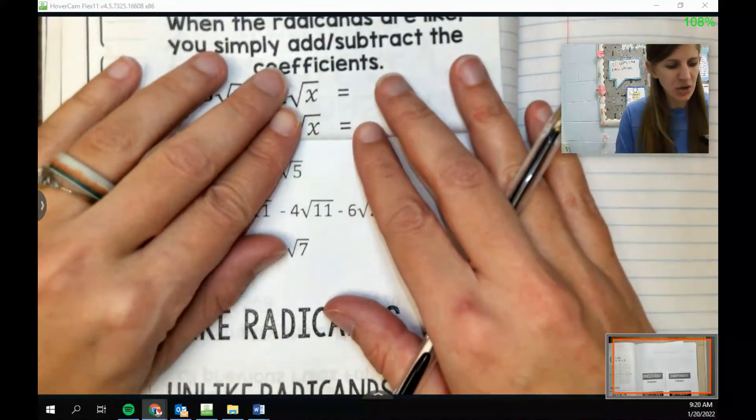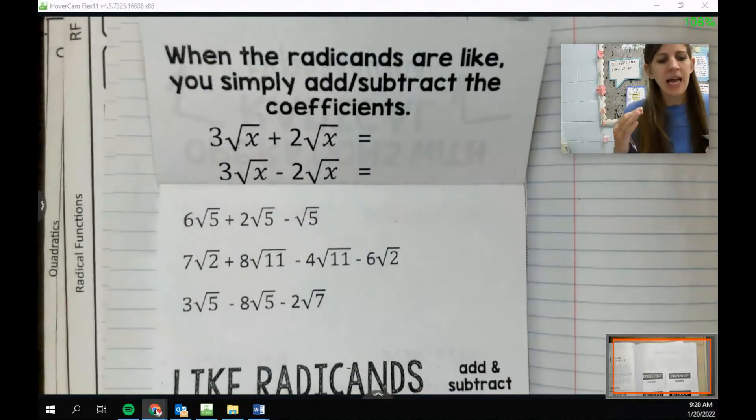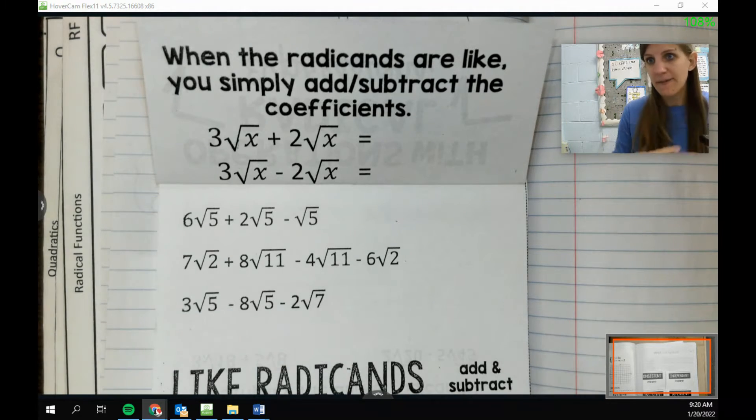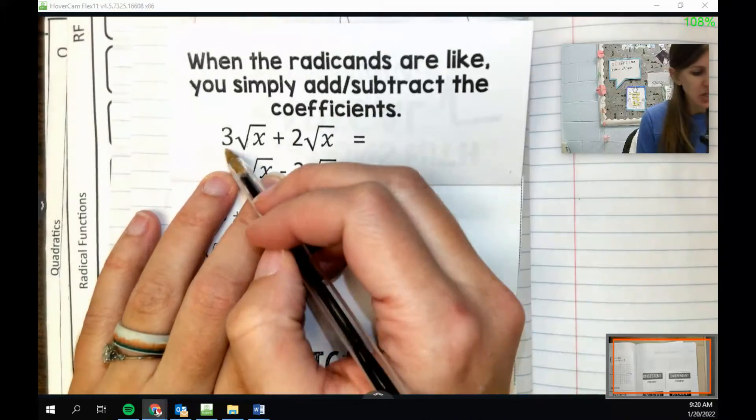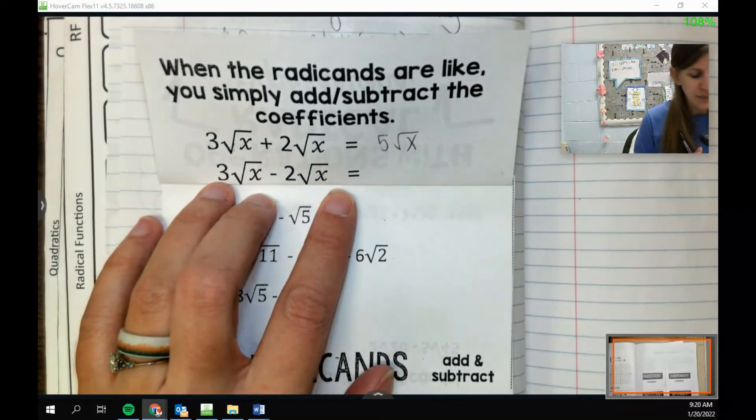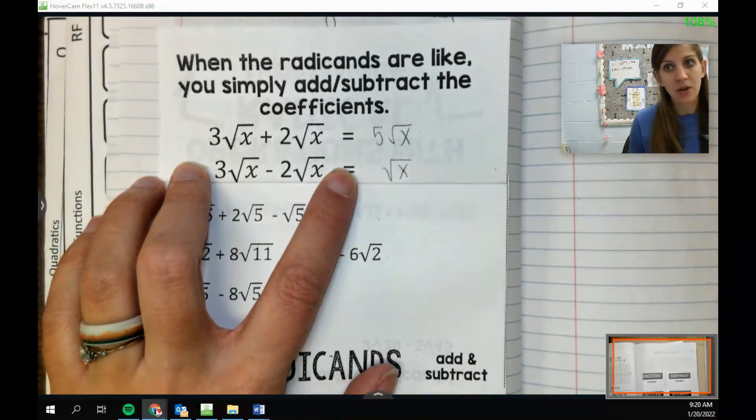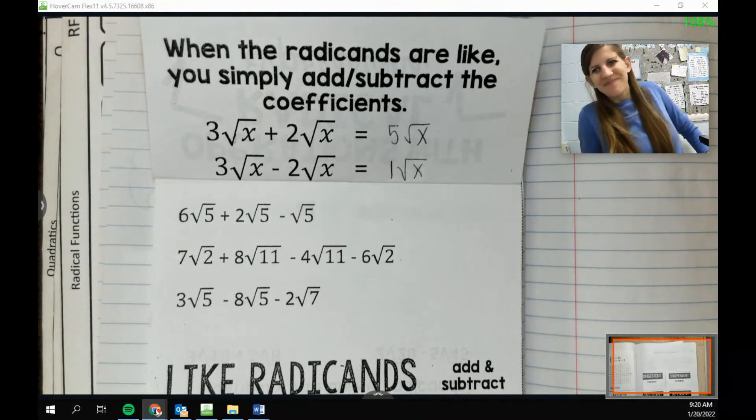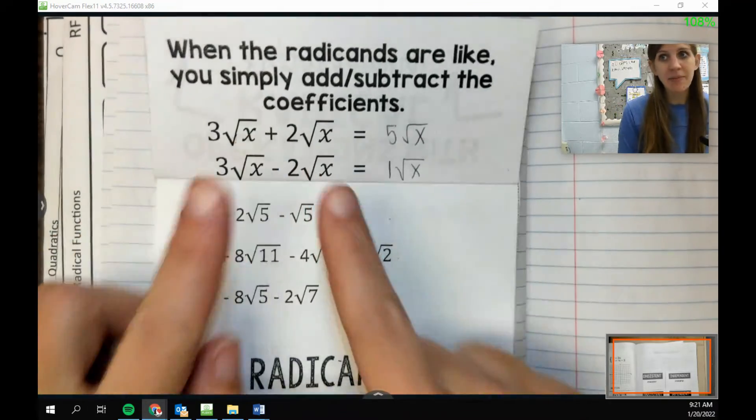When our radicands are alike or are the same, we simply add or subtract the front numbers. It's kind of like an X. If I'm doing 3X plus 2X, I just say 5X. Same thing when I got a root around it. If my roots are the same, I just add the front numbers. So 5 root X. If I'm subtracting, I just subtract the front numbers. 3 minus 2 is 1 root X.